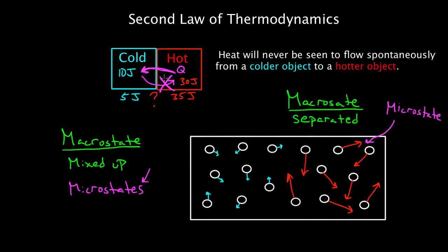Energy will always, at least spontaneously, if you let it do what it wants to, energy is always going to dissipate and evenly distribute. That's why it goes from the hot to the cold. This energy is trying to get mixed up, just because statistically, there are so many more ways for that to happen.